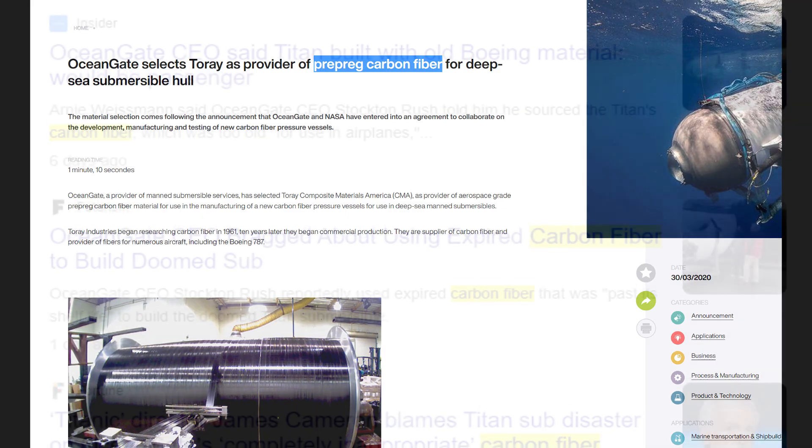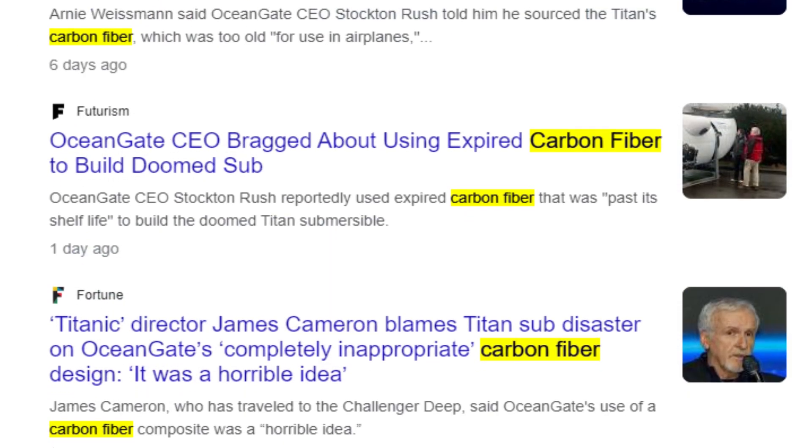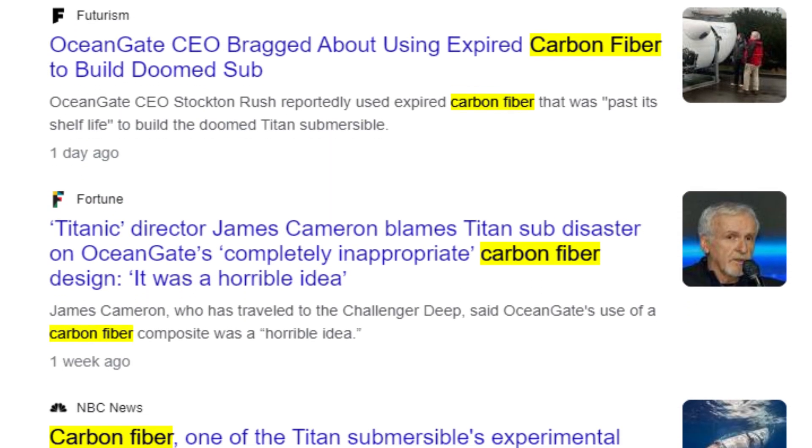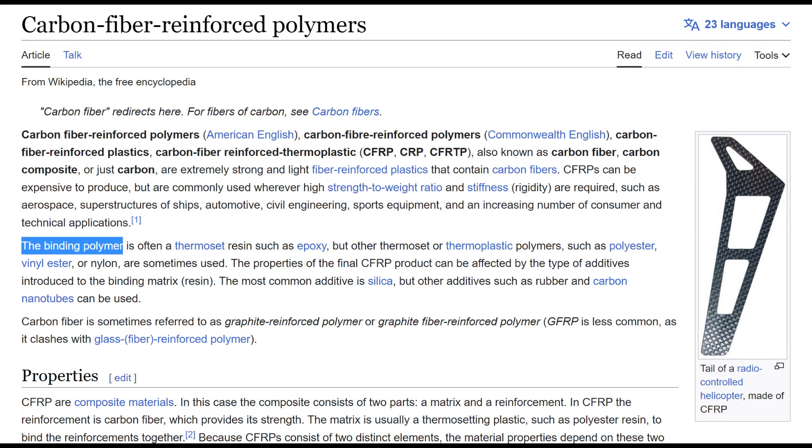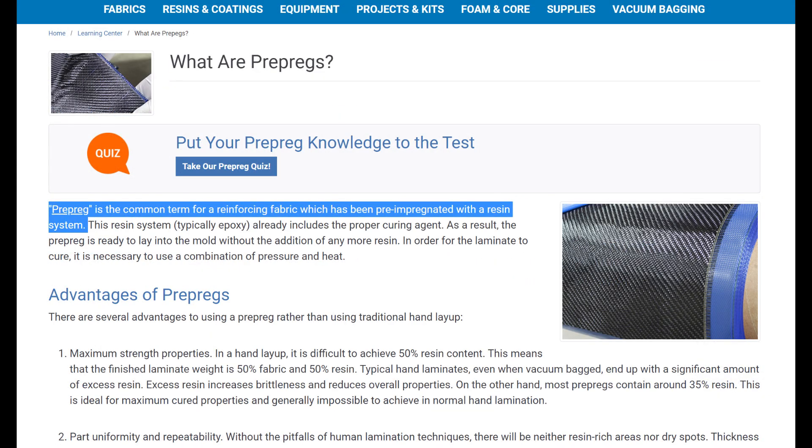Now a lot of people might be confused by hearing it was made out of carbon fiber. Well yes, but carbon fiber on its own, you wouldn't be able to make an airtight hull out of. So you need something to bind the carbon fiber together with, which is typically a plastic, a polymer, a resin of some sort, usually epoxy.